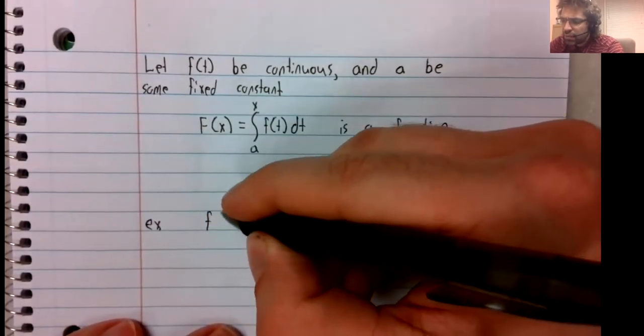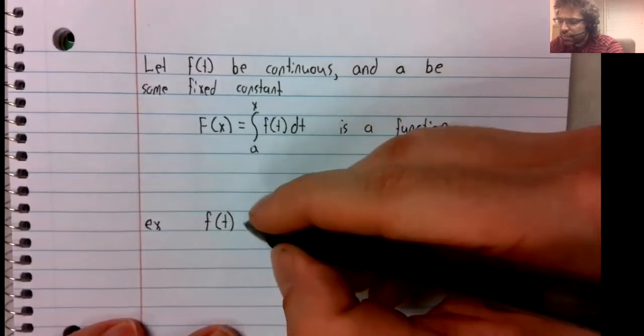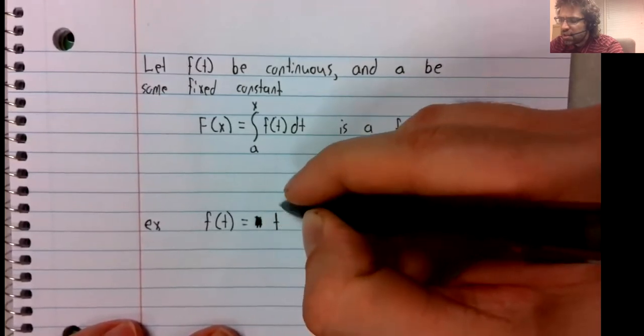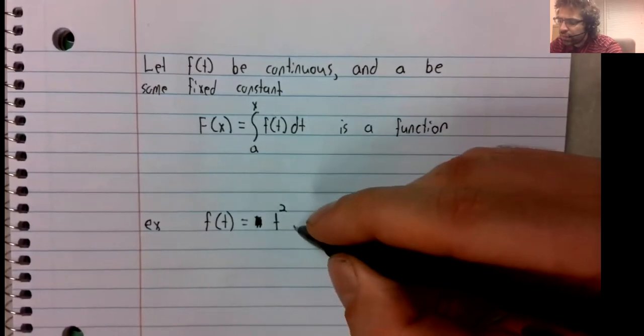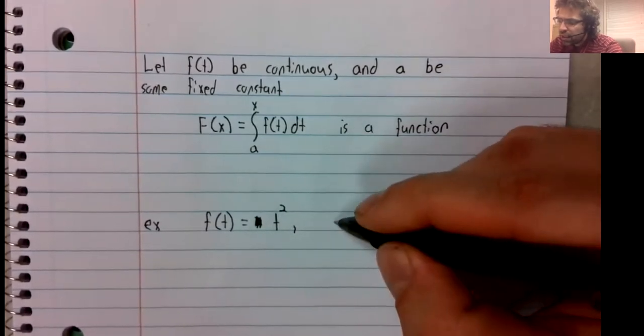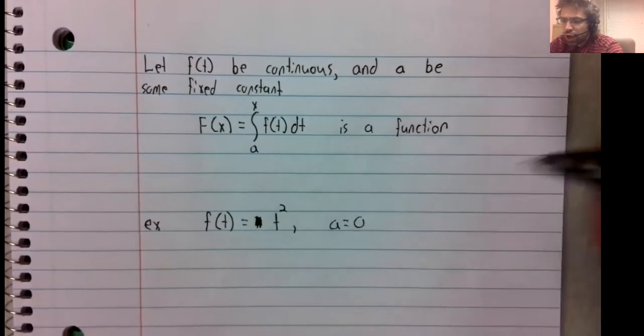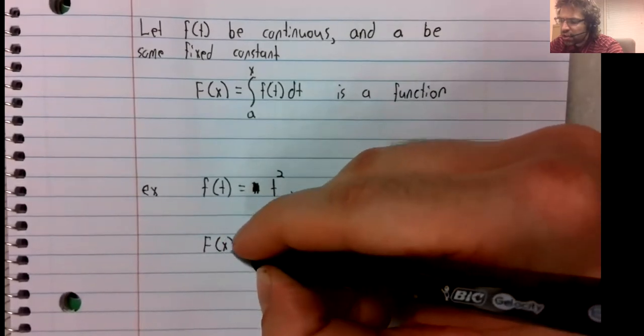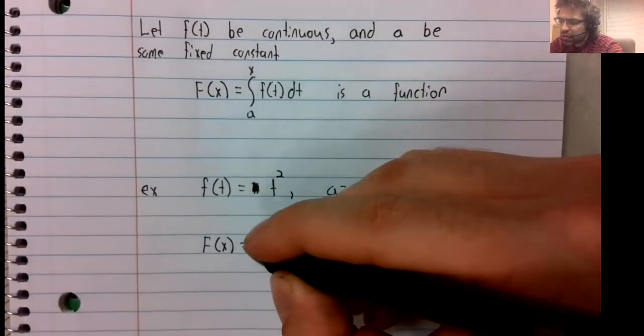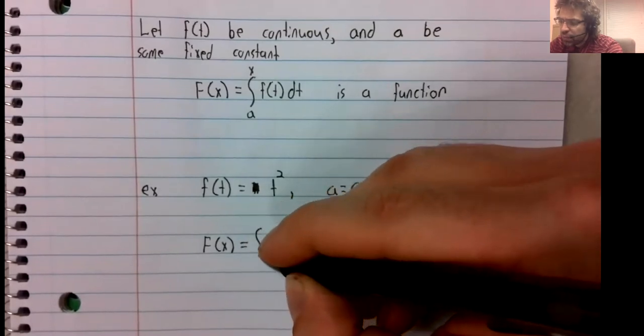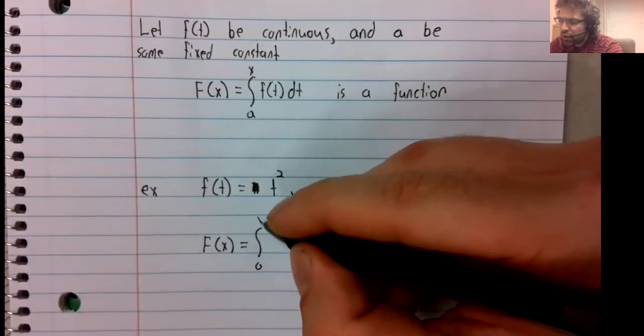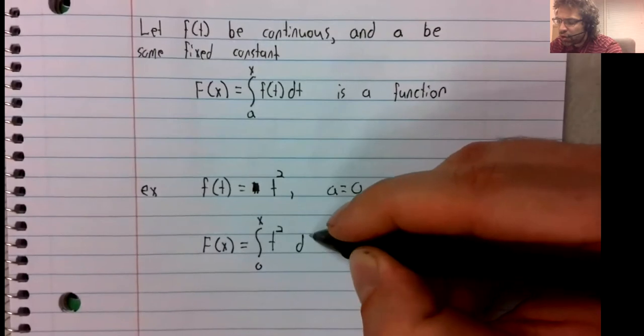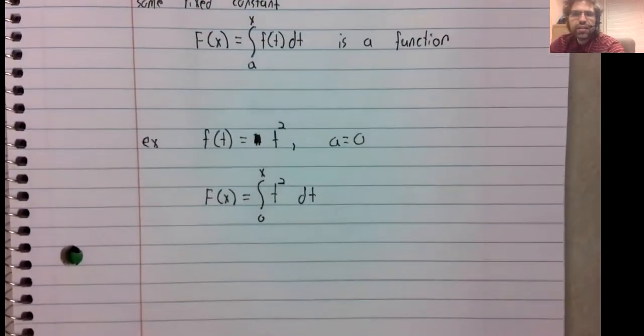Say f(t) equals t squared, and we can let a be zero. So we've got this function, capital F(x) equals the integral from 0 to x of t squared dt.